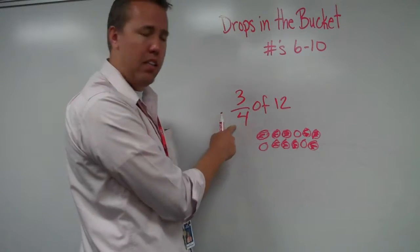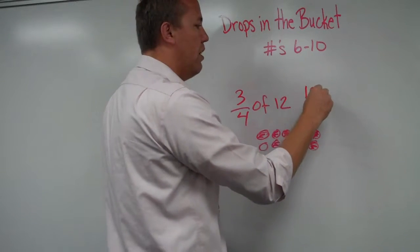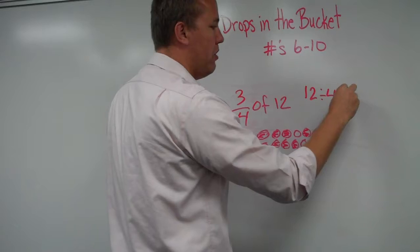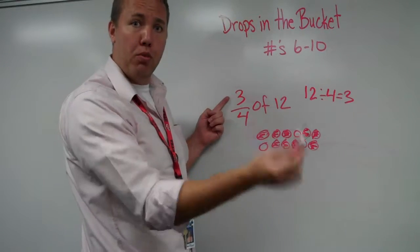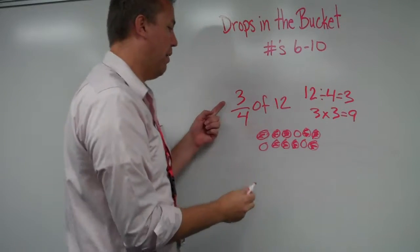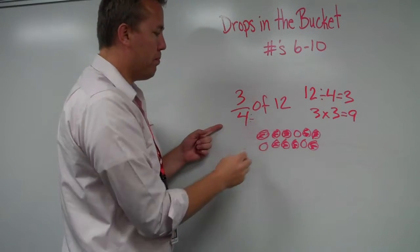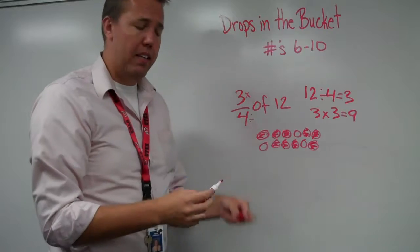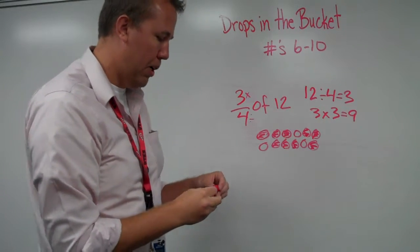Or, because I want to divide it into fourths, I do 12 divided by 4 equals 3. And I have 3 of those. 3 threes. 3 times 3 equals 9. So you would divide by the bottom and times by the top. That is fractional parts.